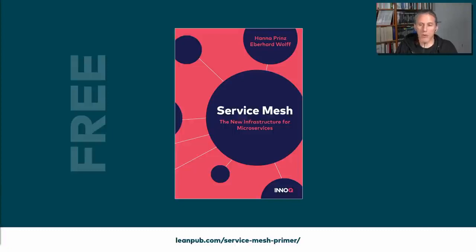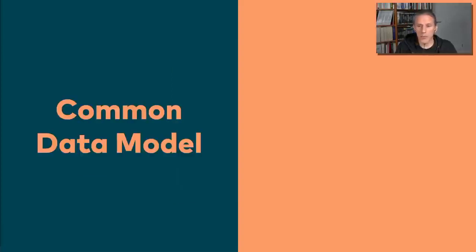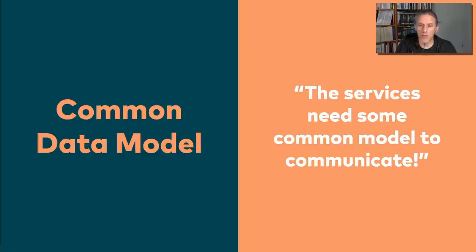What I'm going to talk about now are things that I saw out in the wild that made projects fail, or at least have some problems. I will start off by giving a name to each of these issues or challenges. The first one is the common data model. A citation from a project that might run into that problem is: the services need some common model to communicate.